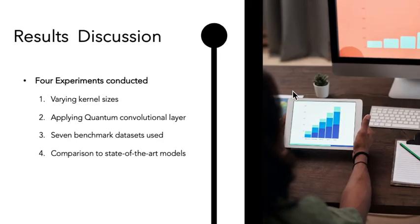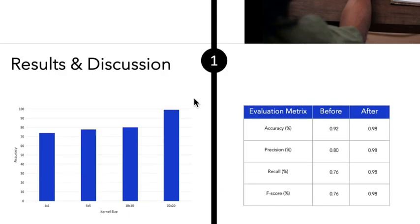For our results, we have four experiments that were conducted. The first experiment we can say is varying kernel size. The second experiment, we applied the quantum convolutional layer. The third experiment, we used the seven benchmark datasets with our proposed QCNN. The fourth experiment is comparison to the state-of-the-art models.